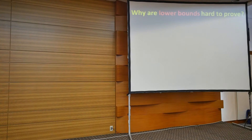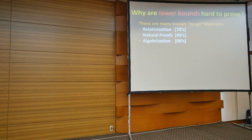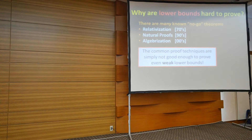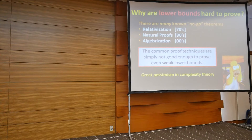So why are these things hard to prove? Why are we so far from resolving P and NP? There are various no-go theorems — relativization, natural proofs, algebrization — I won't go into the details. At a high level, these no-go theorems say that the common proof techniques are simply not good enough to prove even weak lower bounds, which seem very far from P and NP. Not only can we not prove this stuff, but we can prove that we cannot prove this stuff. This has led to a lot of pessimism in complexity theory.